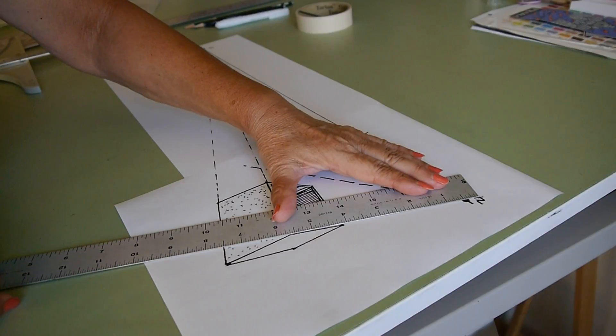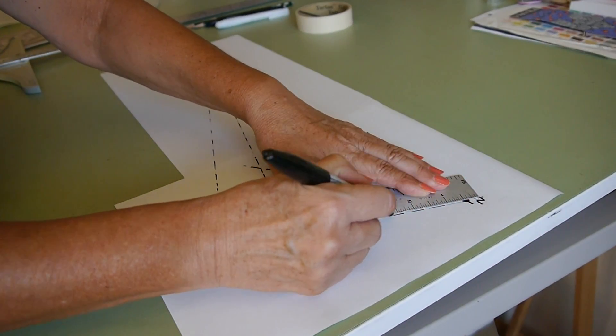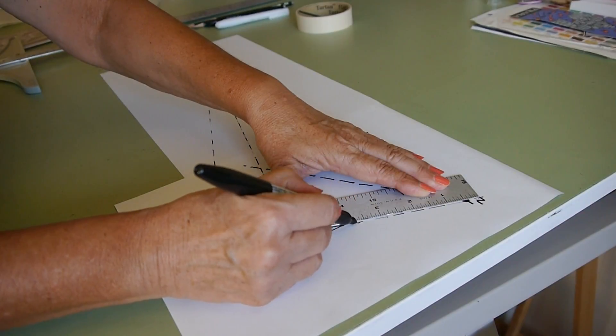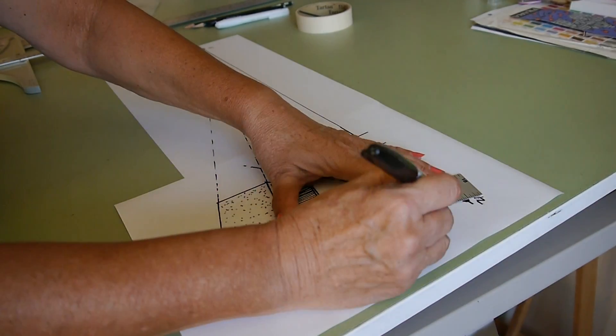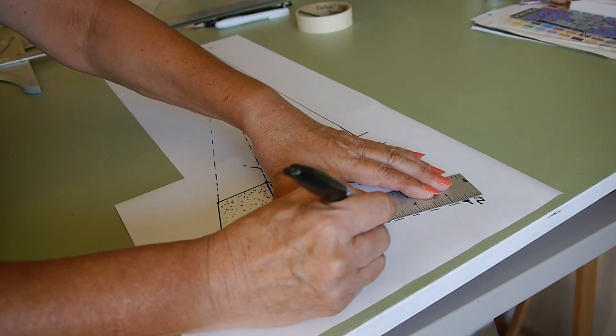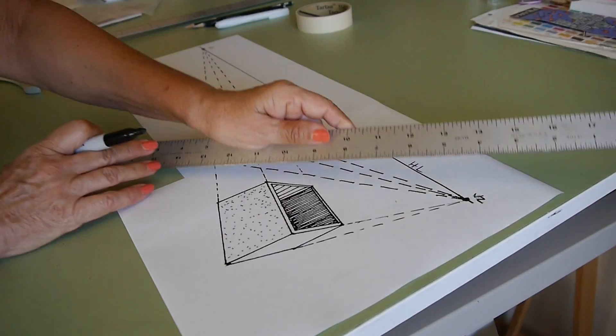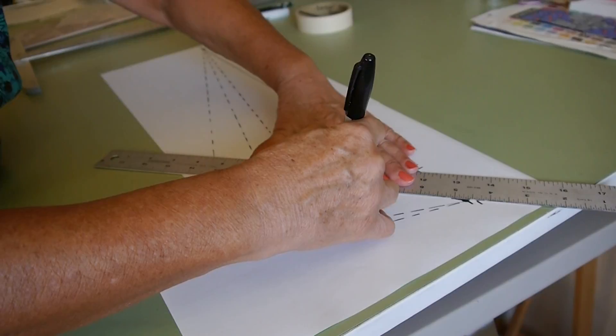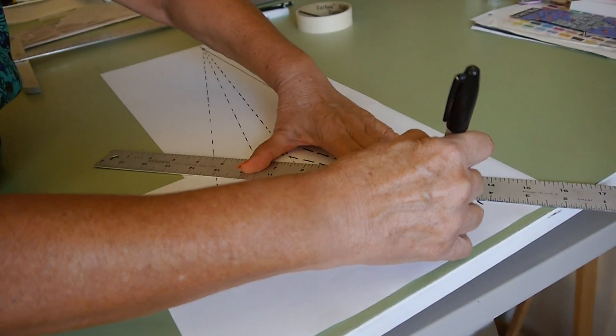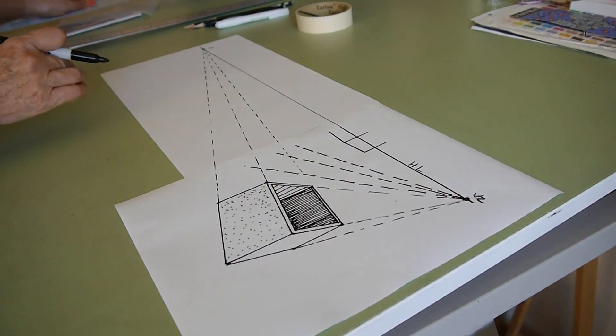So what I'm going to do, I'm going to trace my lines back into that one and anything that I draw in this box is going to follow the path to the vanishing point. Vanishing point one, vanishing point two.